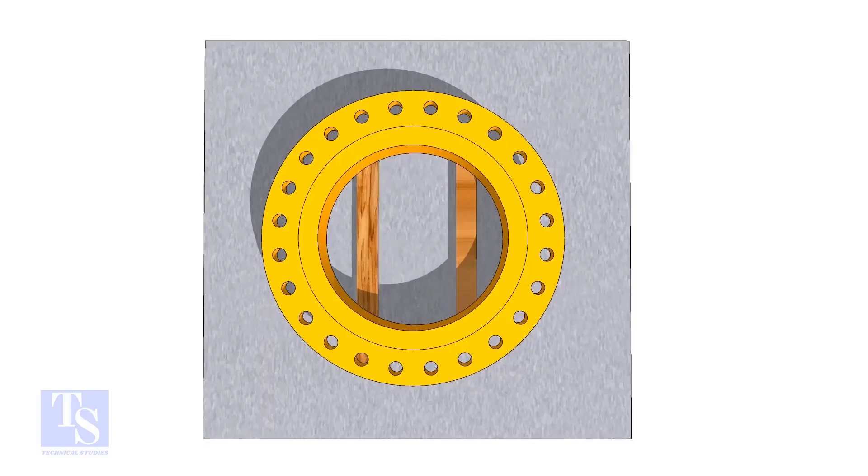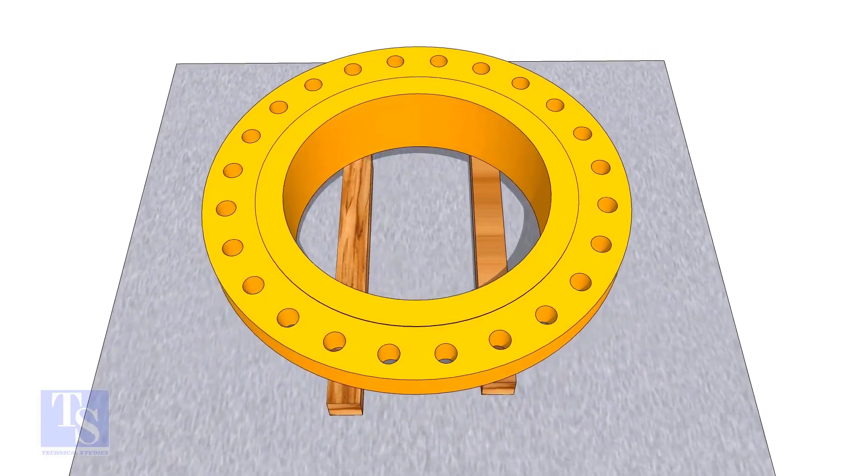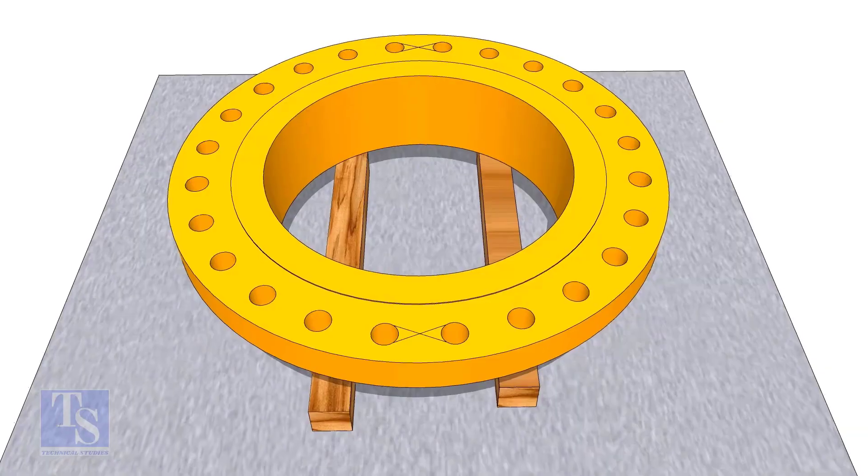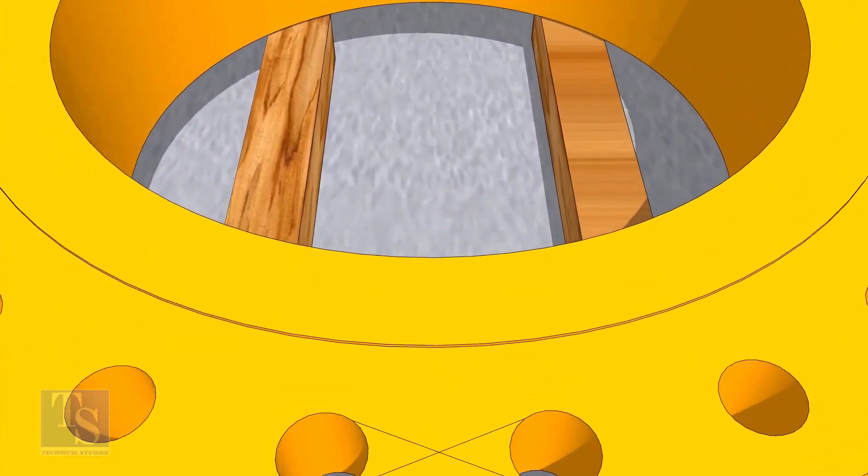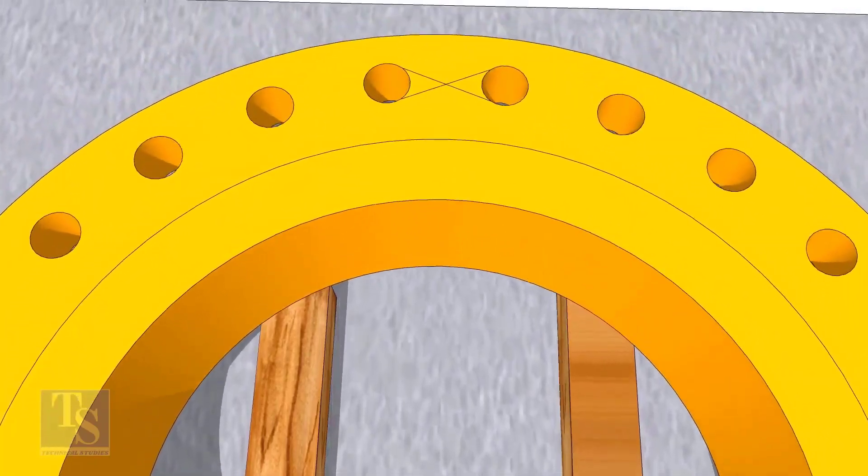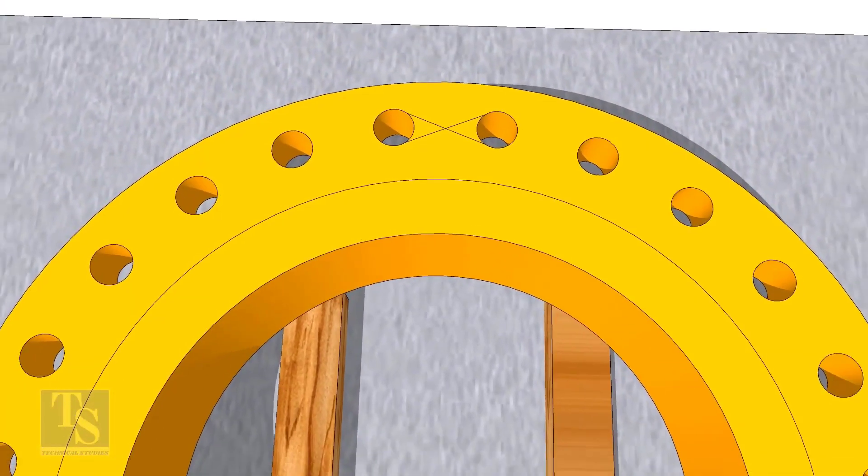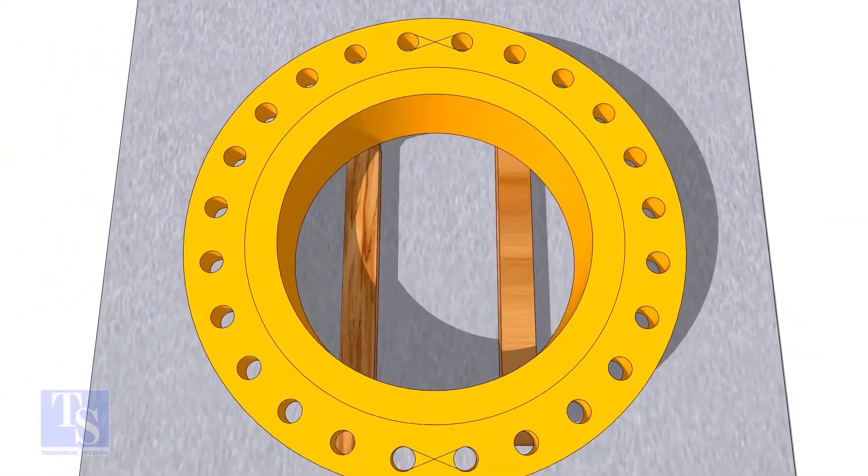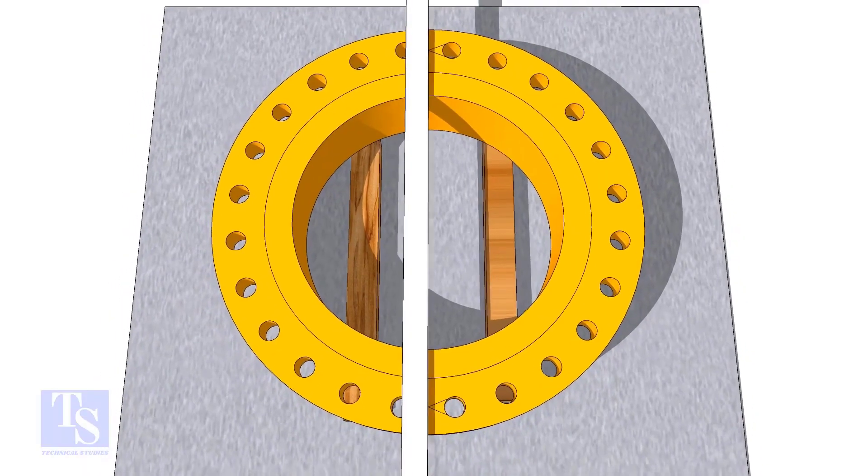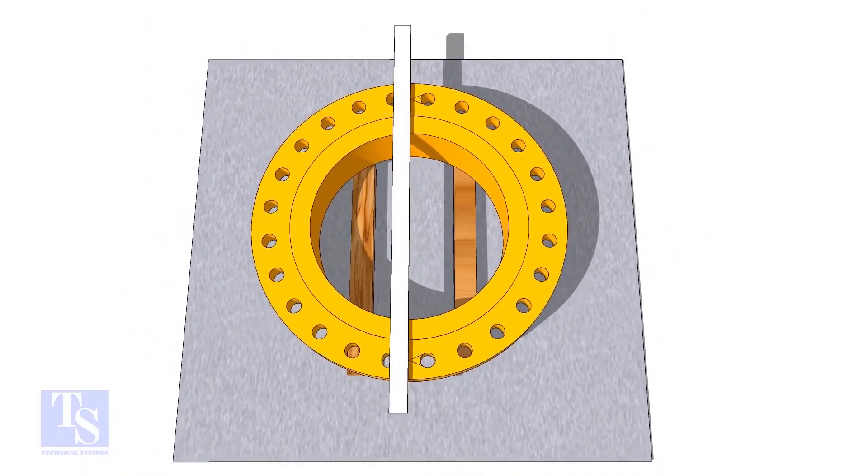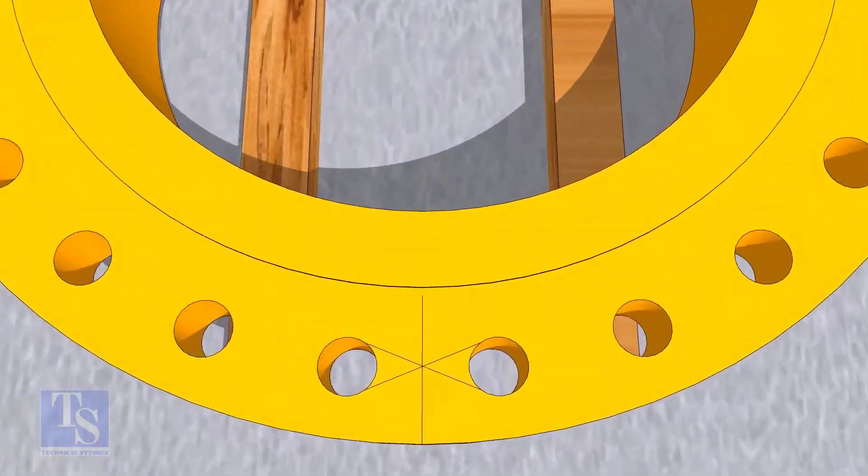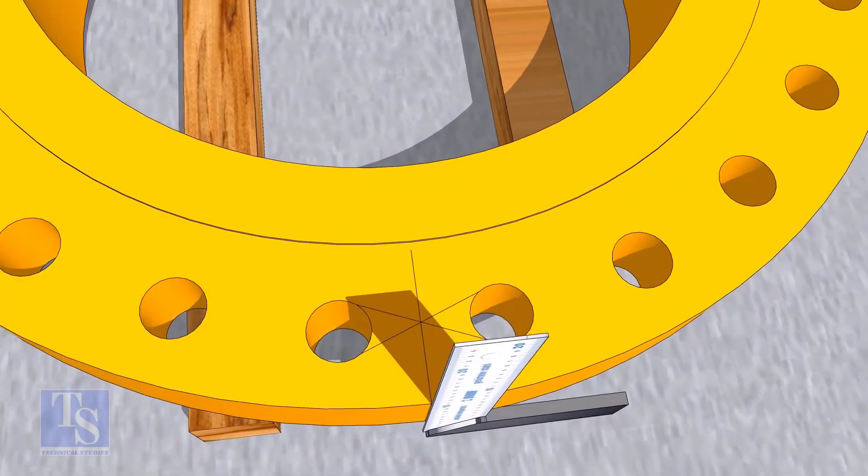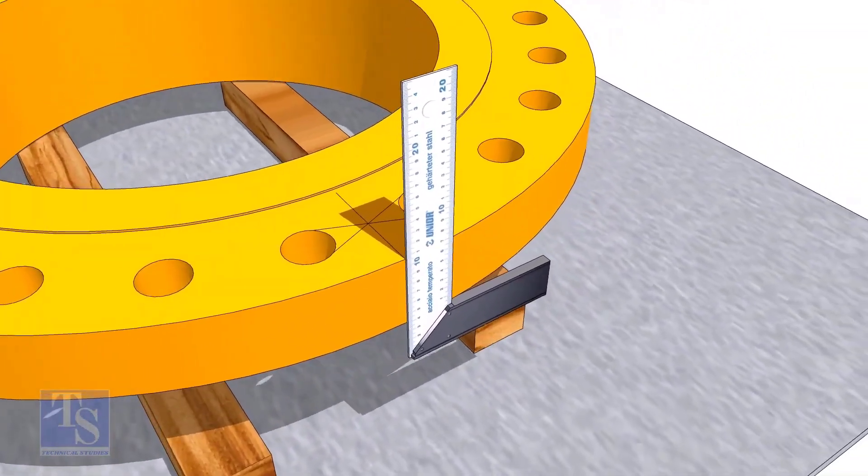In the second method, you need to mark the center line of the flange. Draw tangential lines on two adjacent holes on opposite sides. Draw a line as shown. Transfer the center line to the side of the flange.